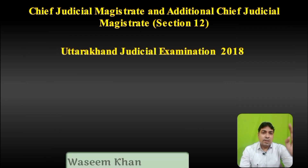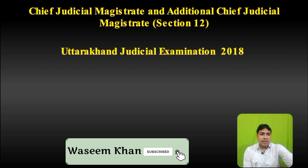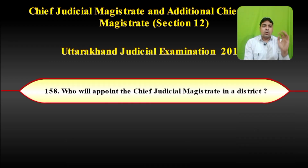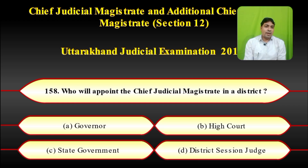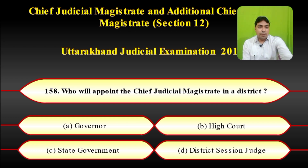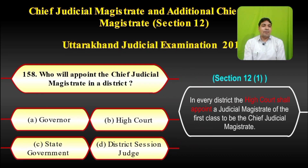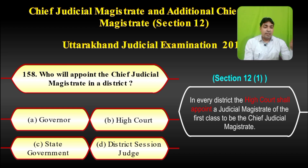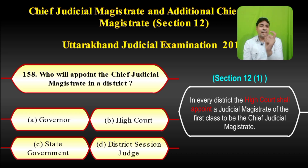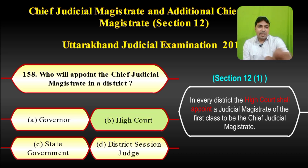A question from the 2018 Uttarakhand Judicial Examination on section 12: Who will appoint the Chief Judicial Magistrate in a district? Options: Governor, High Court, State Government, and District Session Judge. Section 12 sub-clause 1 clearly mentions: in every district, the High Court shall appoint the Judicial Magistrate of 1st class to be the Chief Judicial Magistrate. So JMFC में से किसी एक को High Court as a CJM appoint करेगा। The correct answer is High Court.